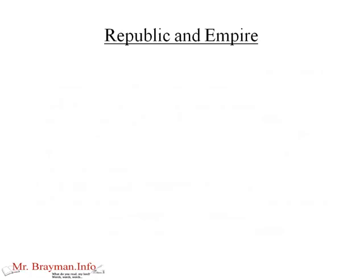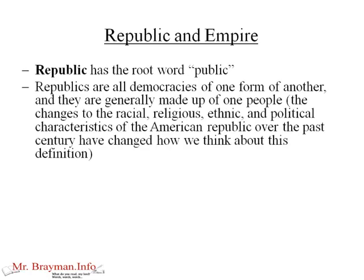Let's look at the definitions for republic and empire, because this is going to be a big change for the Romans. Republic has the root word 'public.' Republics are all democracies of one form or another, and they're generally made up of one people. The early American republic was white, and it was Christian, and it was very much like a republic is just 'us,' whoever 'us' is. Same for the Greeks — they had little republics, although they did have kings. For the Romans, there's only one people, so it's very easy to have that republic.